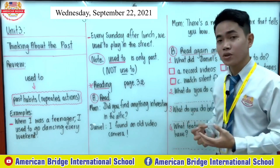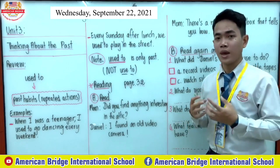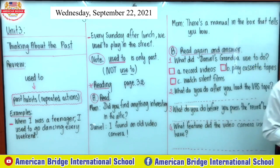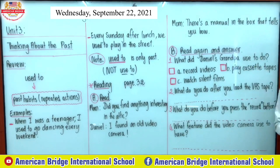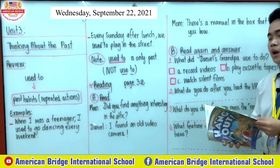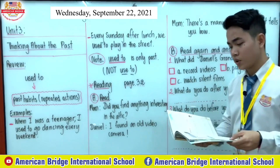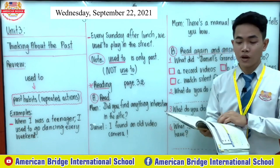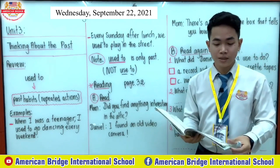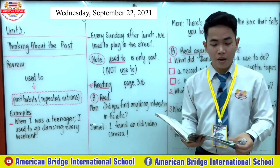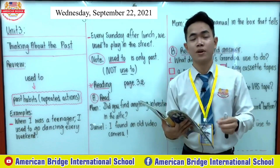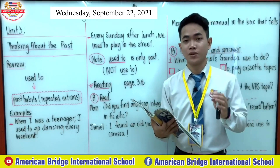Now let's move on to page 32. Page 32 is about reading comprehension. I want you to turn your book to page 32. We're going to do Part A, which is about reading. Let's spend some time to read our conversation together.